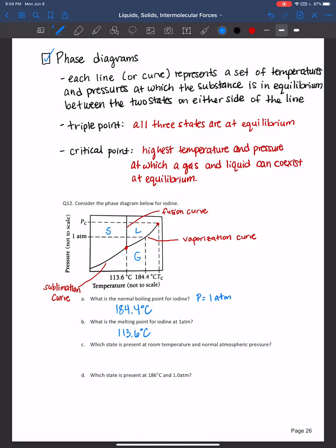Now the next question is asking us, which state is present at room temperature and normal atmospheric pressure? Room temperature is what degree Celsius? 25. Fantastic. And atmospheric pressure at normal is one atmosphere. We just said that.